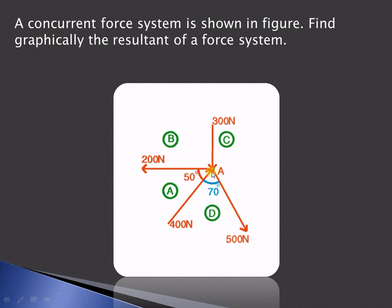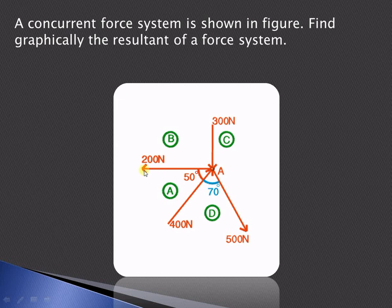The space between these particular forces is divided using Bow's notation. A, B, C, and D are the Bow's notation labels. AB represents the 200 newton pull force, BC represents the 300 newton push force, CD represents the 500 newton pull force, and DA represents the 400 newton push force.